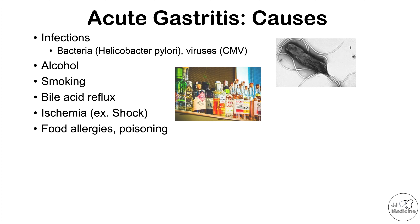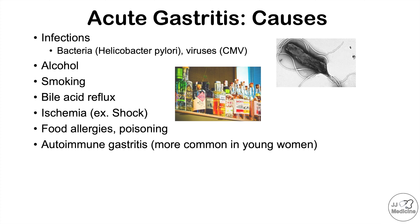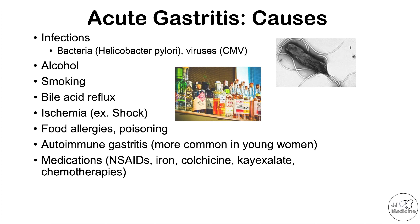Food allergies and poisoning can also lead to acute gastritis. There's another form known as autoimmune gastritis, where autoantibodies are formed that attack the stomach mucosa — this is more common in young women. Certain medications can also cause acute gastritis, including NSAIDs like ibuprofen, iron supplements, colchicine (a gout medication), K-exalate (used to reduce potassium levels), and certain chemotherapies.